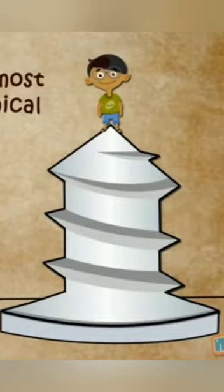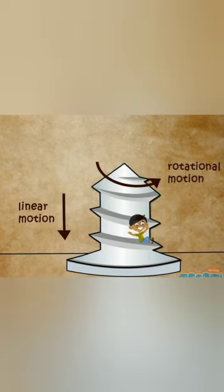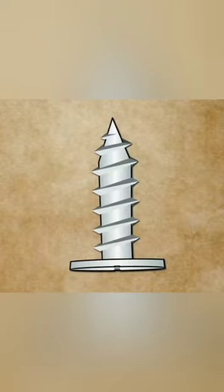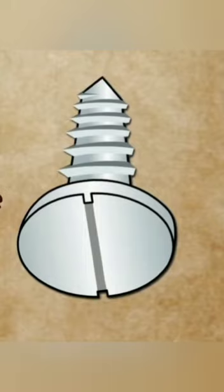What is a screw? A screw is one of the most commonly used mechanical devices in the world. It is a machine that converts rotational motion into linear motion. A screw has a long and thin metal shaft with threads spiralling along its length. It also has a turning head with a groove where a screwdriver can be used to rotate the screw.